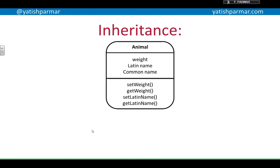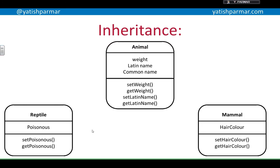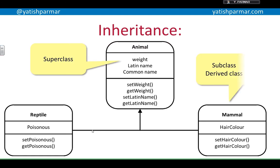Inheritance is when — think about animals, all different animals, but they fall into categories and they all have certain things in common. So in this class diagram I've got my animal class, and I can have reptiles that are animals and mammals that are animals. There's no point in redefining the weight, the Latin name, the common name, get weight, set weight, etc. for each of those. So I can use something called inheritance, where my reptile inherits the properties and methods of the animal class, and my mammal does the same. The reptile and mammal have different methods and properties specific to them, but they inherit all the common things from their ancestor. The animal is a superclass, and mammal or reptile would be called a subclass or a derived class — two different names for it. In Java you will probably hear the term subclasses.